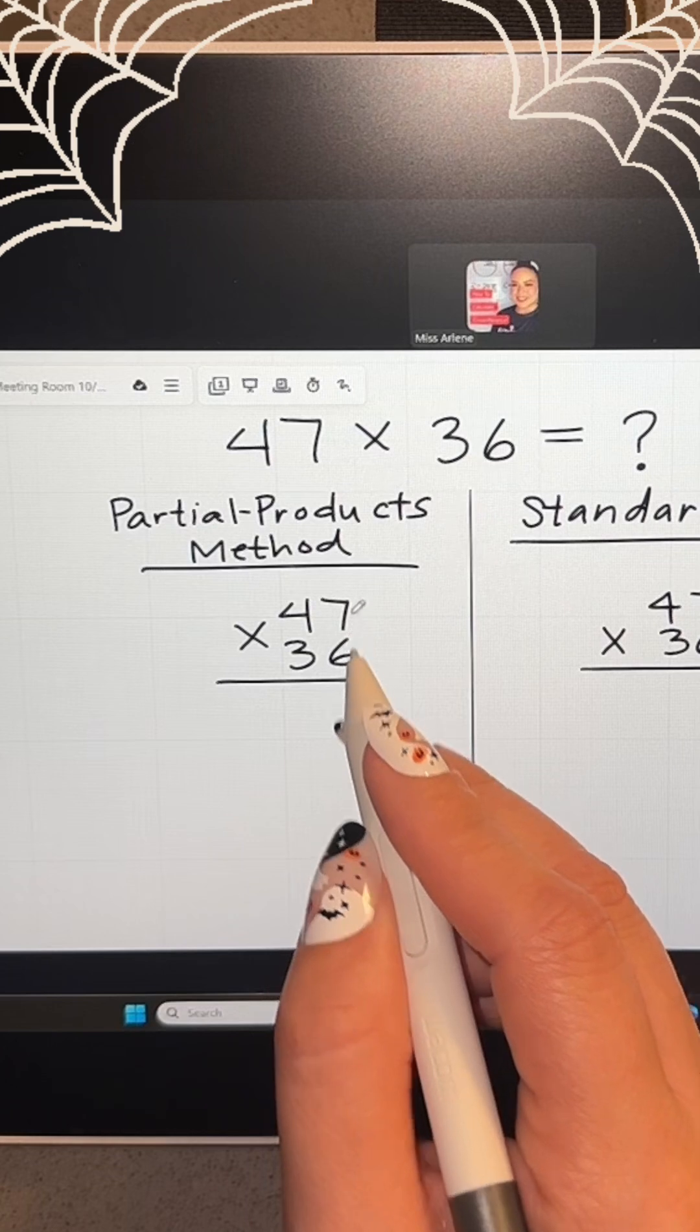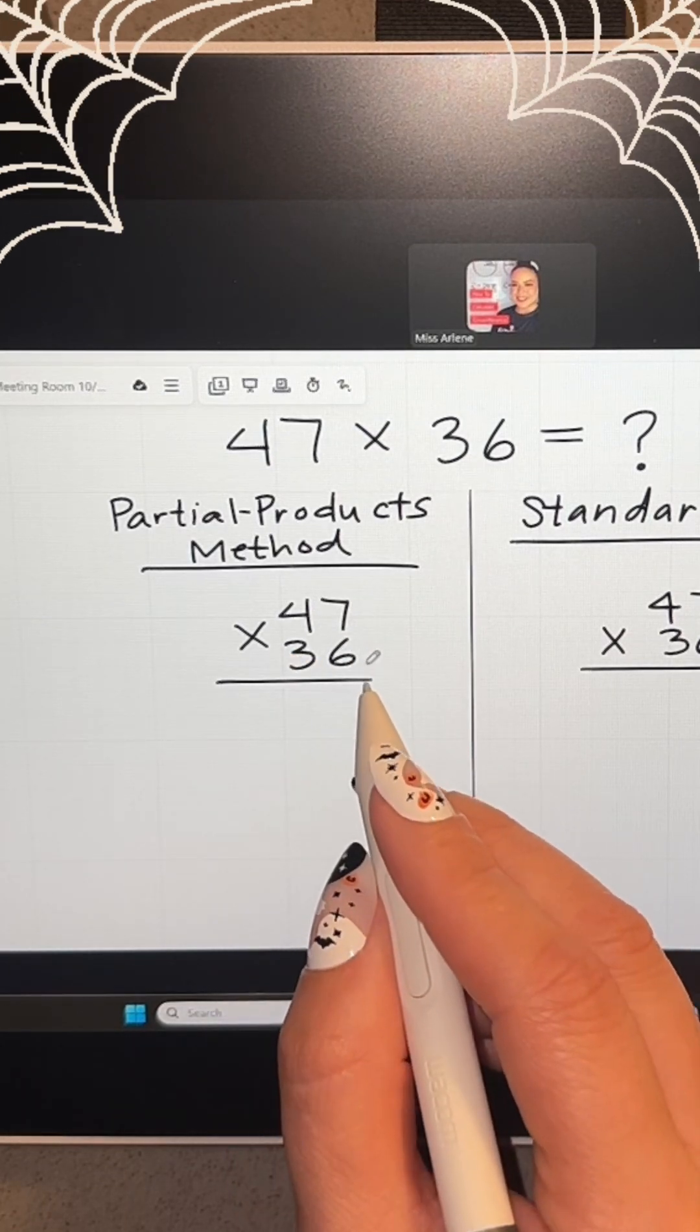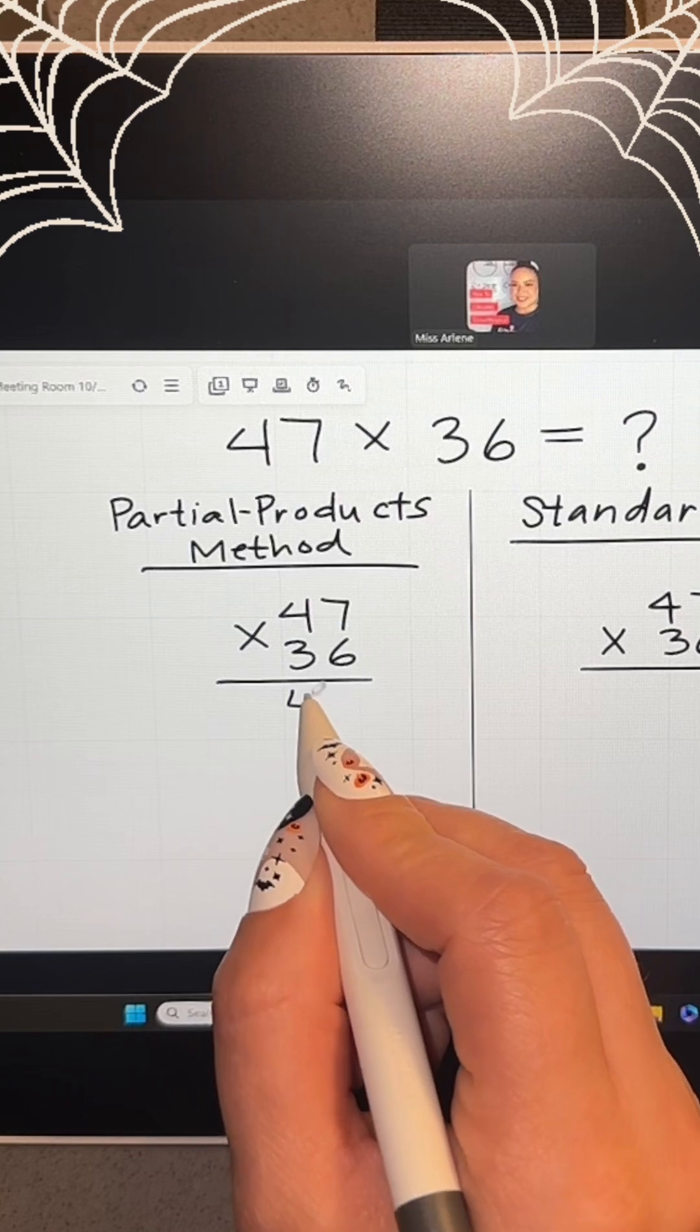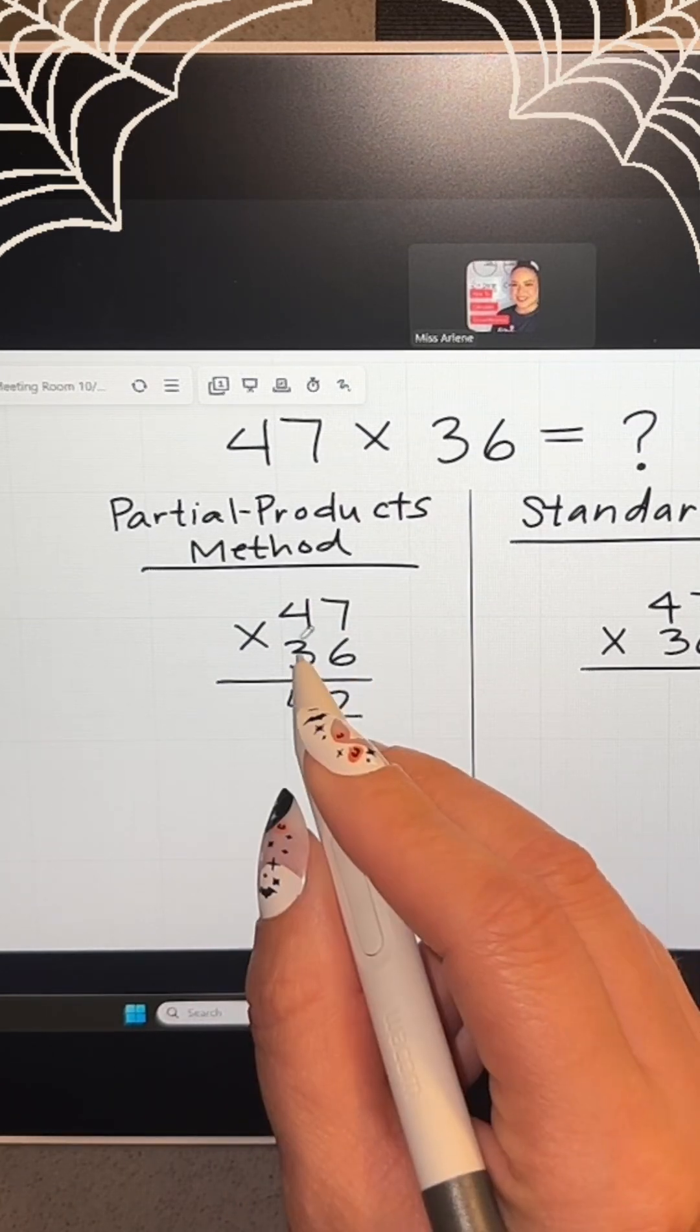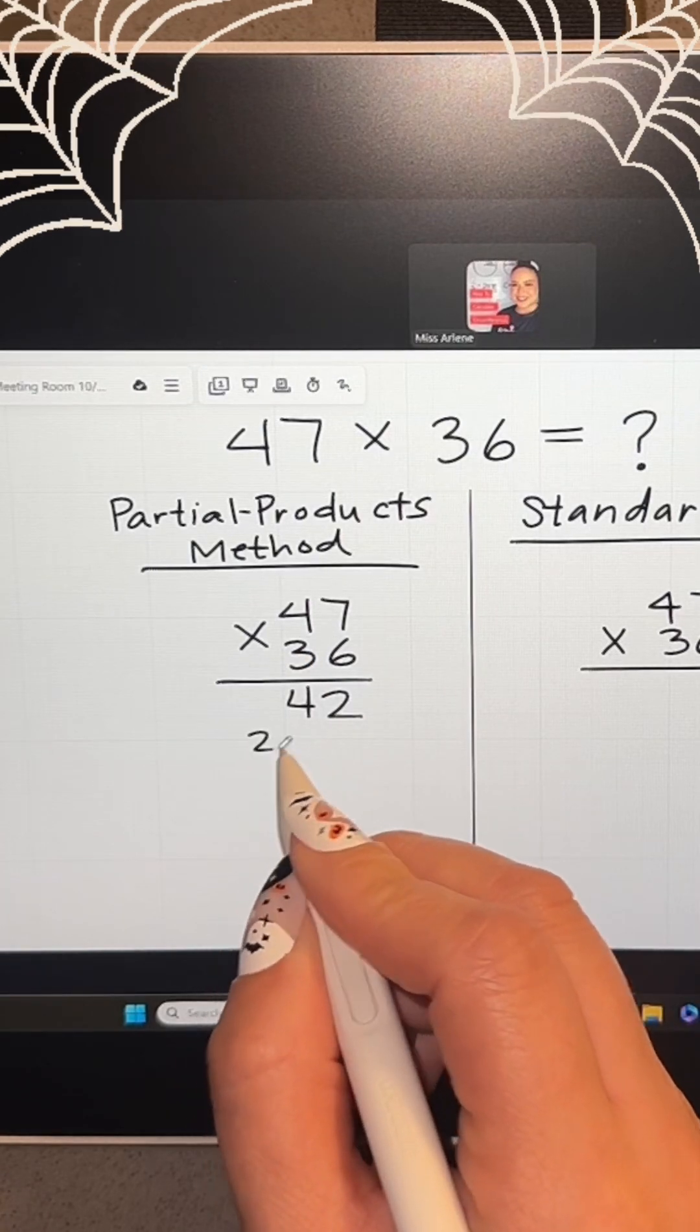For this one, you're going to grab the 6 and multiply it up and across using place value. This means 6 times 7. We're going to write that down below. That's 42. And then 6 times 40 since the 4 is in the 10s place. That's 240.